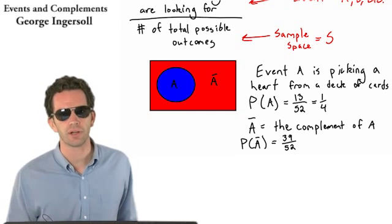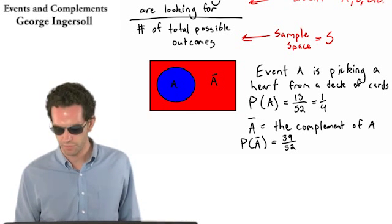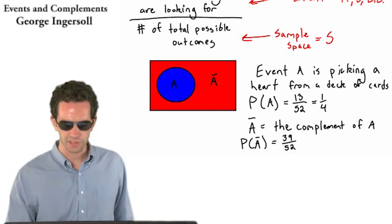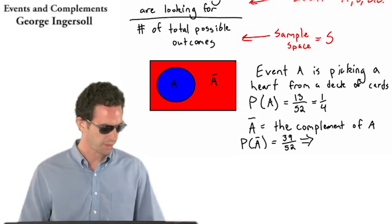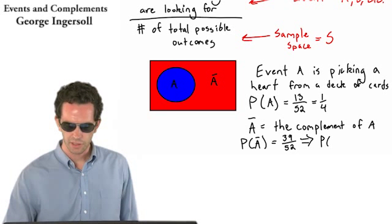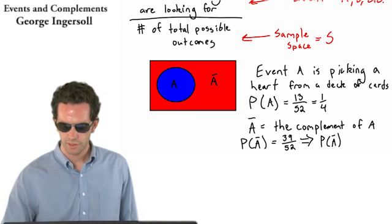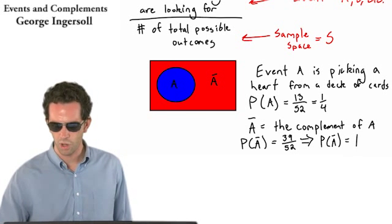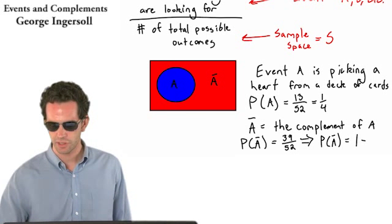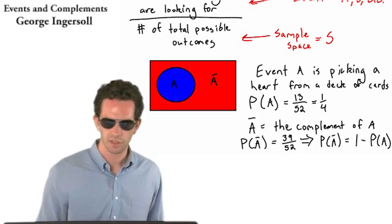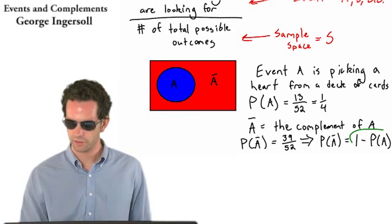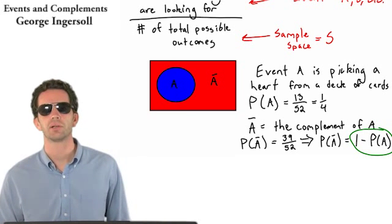So the probability of getting something other than A is 39 out of 52. Probability of drawing something other than a heart is 39 out of 52. And this can actually simplify to another definition, which is this. Probability of the complement of A is equal to 1 minus the probability of A. This is an important definition. I'm going to circle it in a new color, green, because I want you all to remember it.